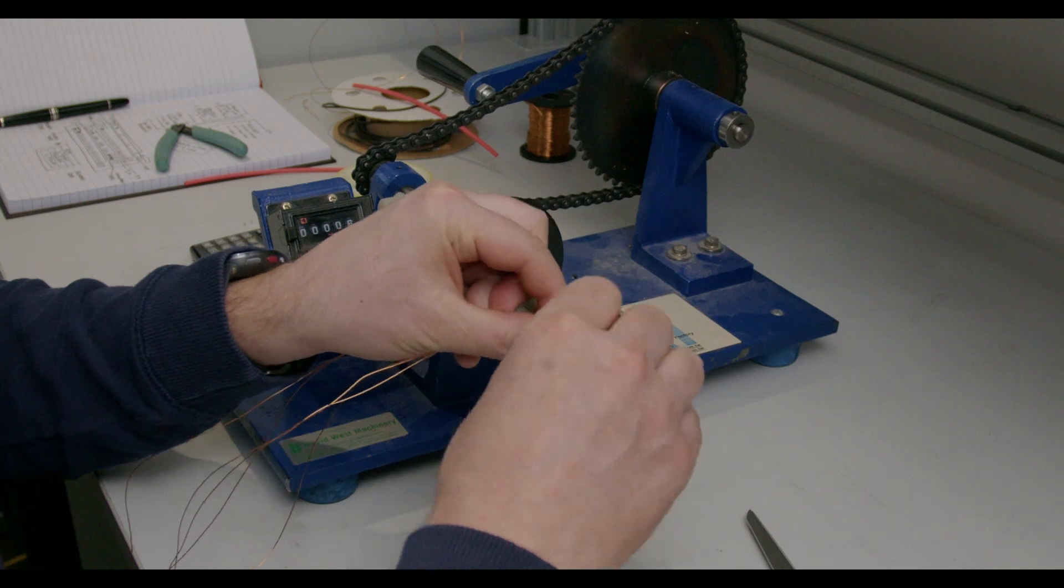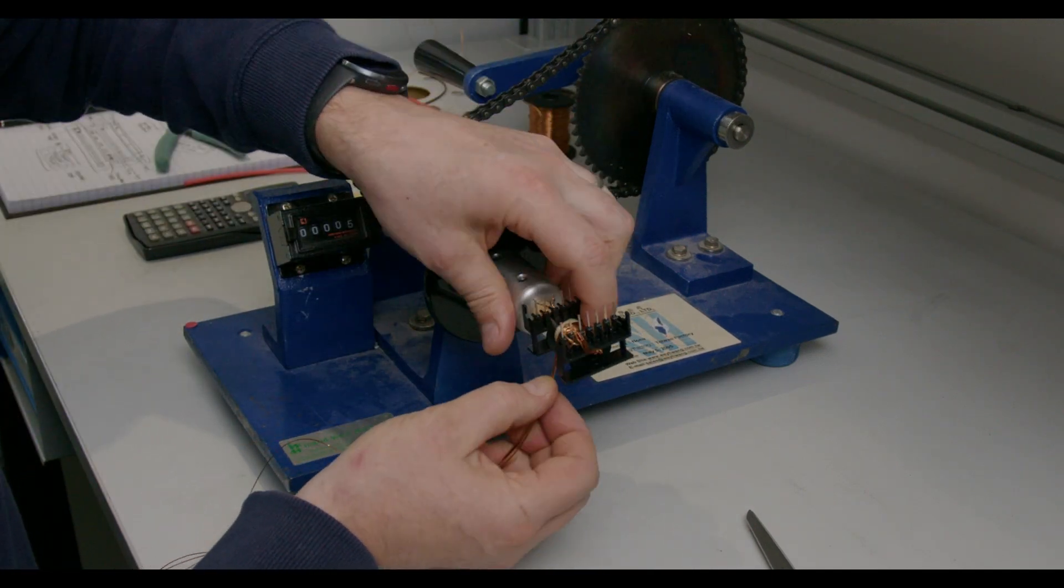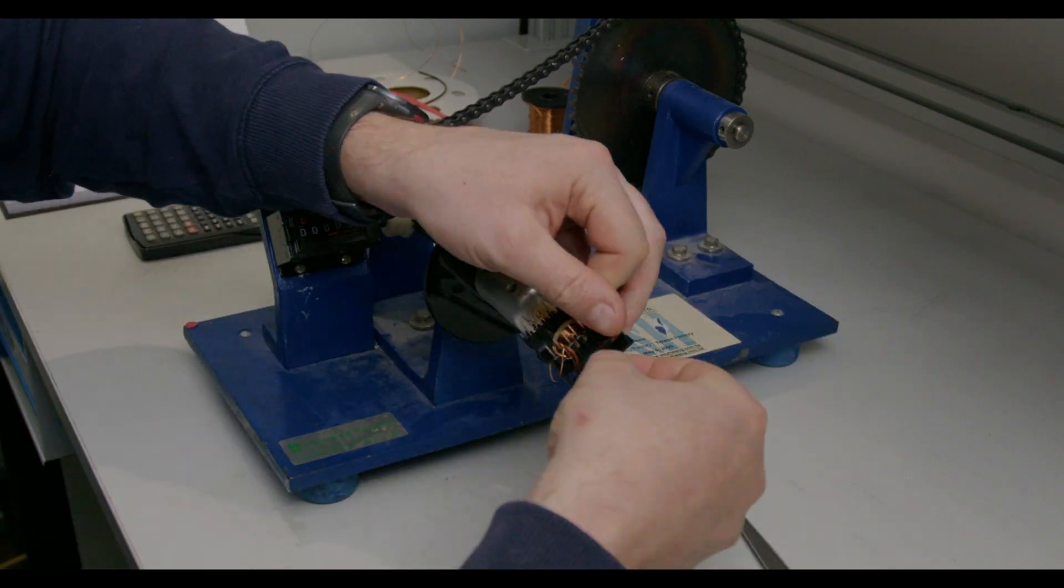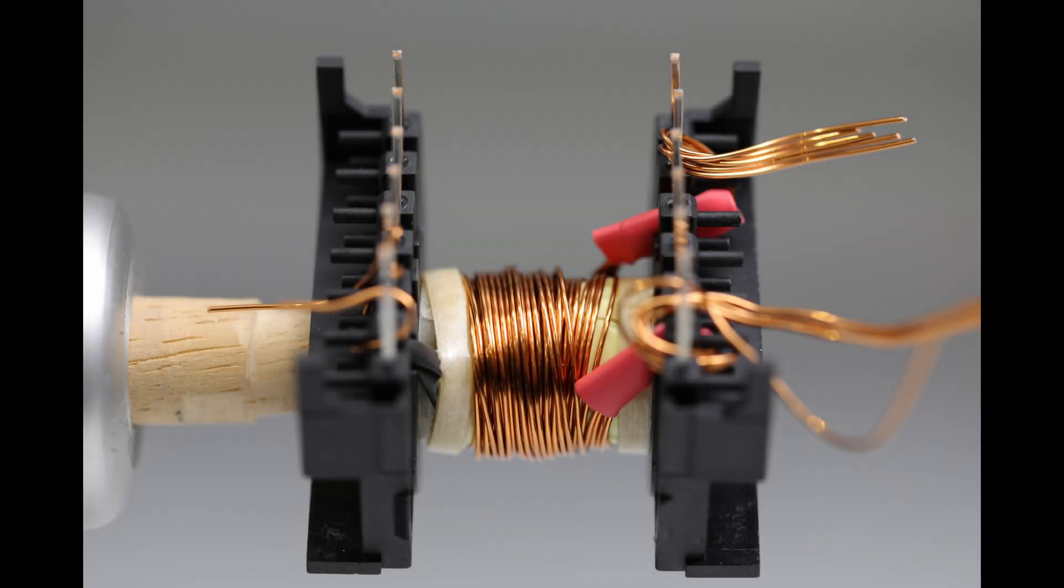We now wind the nine secondary turns as two layers across and back. The secondary winding comprises five parallel strands of 0.5 millimeter wire which we wind as a flat ribbon winding to do the best job we can of providing a flat winding surface for the windings to fit on top.